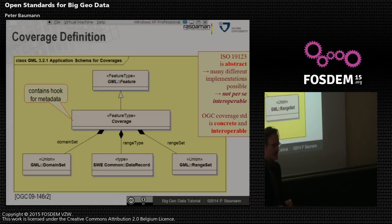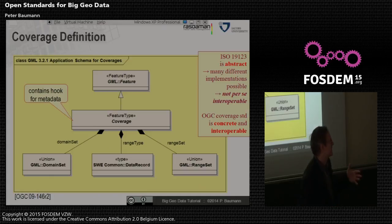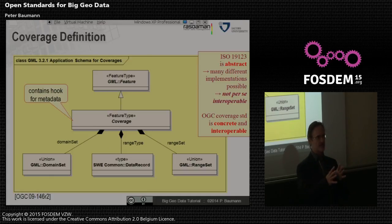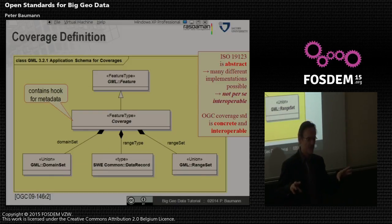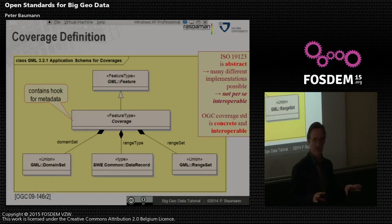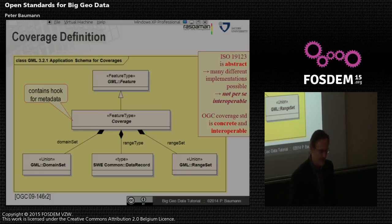By the way, you will often find this named GML-COV. That is a convenient shorthand we found, because OGC had the idea to name this 'GML 3.2.1 application schema for coverages,' which is nothing that anybody wants to pronounce. So: GML-COV.